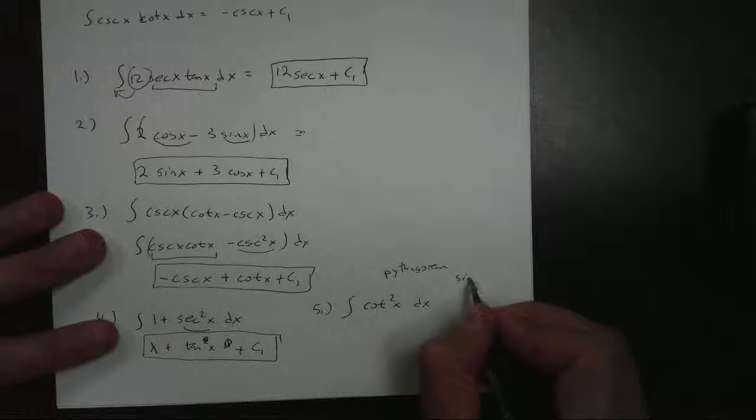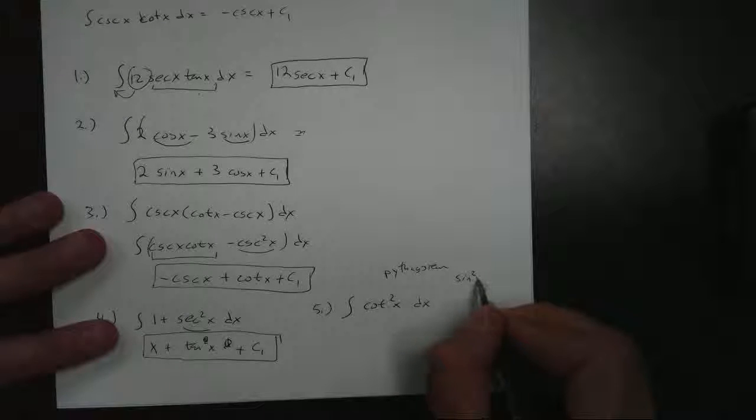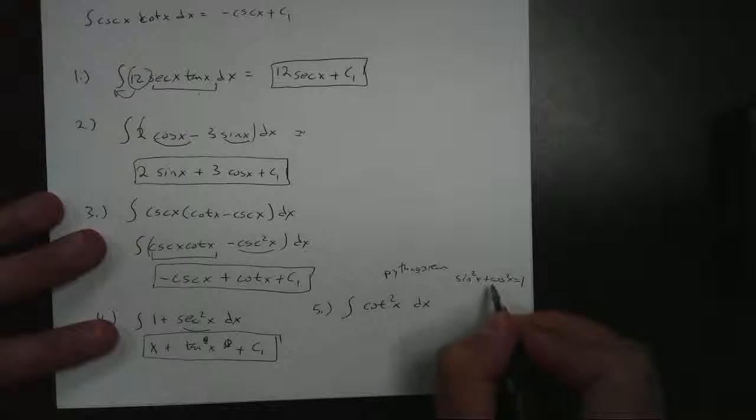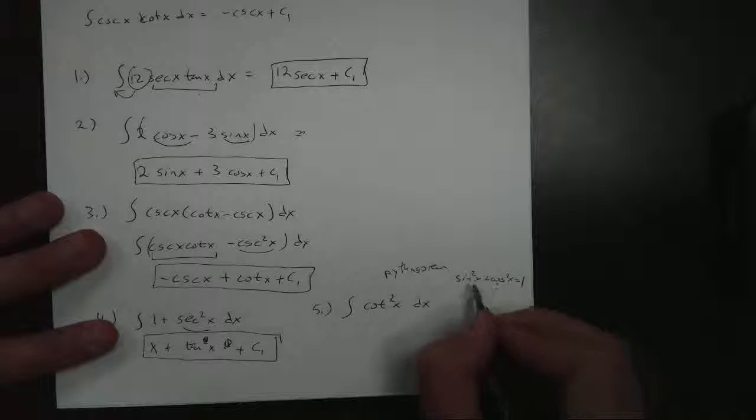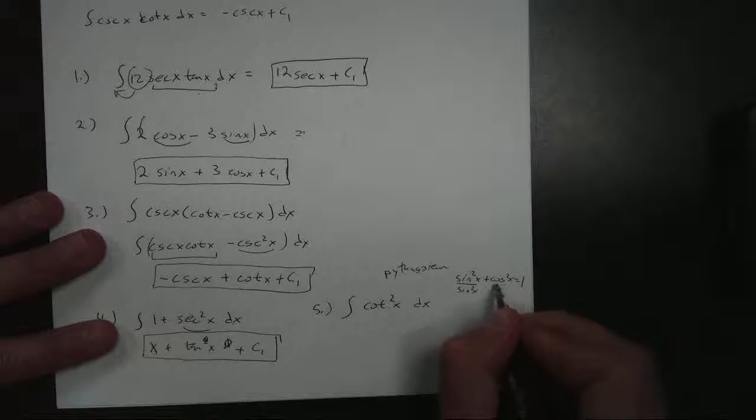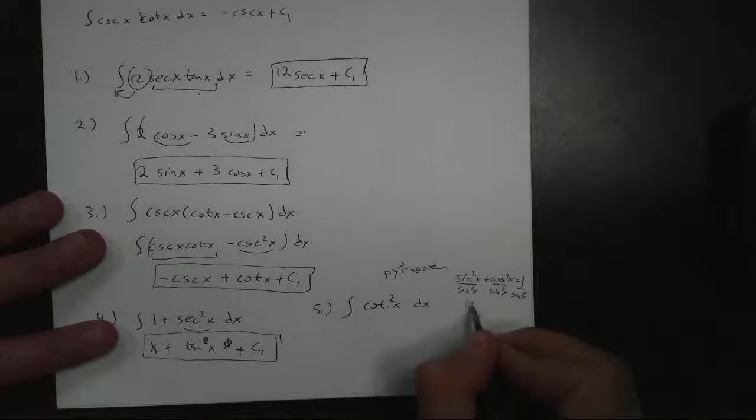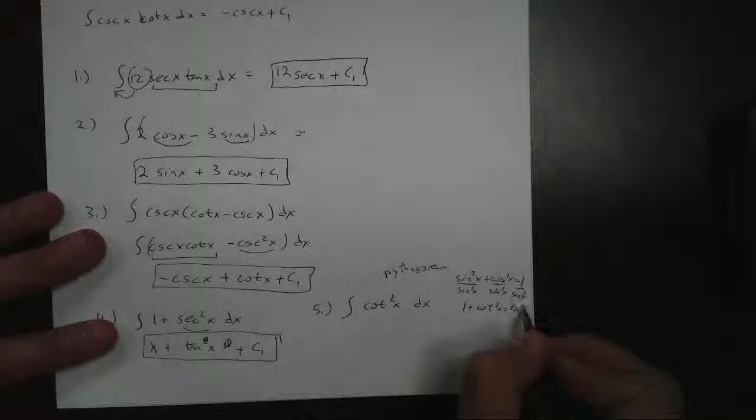I don't know cotangent squared, so I'm going to write this out. But any time I see a trig function squared and I don't automatically know it, I write this out. Cosine squared plus sine squared equals 1. My Pythagorean identity. I want cotangent. Well, cotangent is cosine over sine. So I divide everything by sine squared of x. Sine squared of x. Sine squared of x.